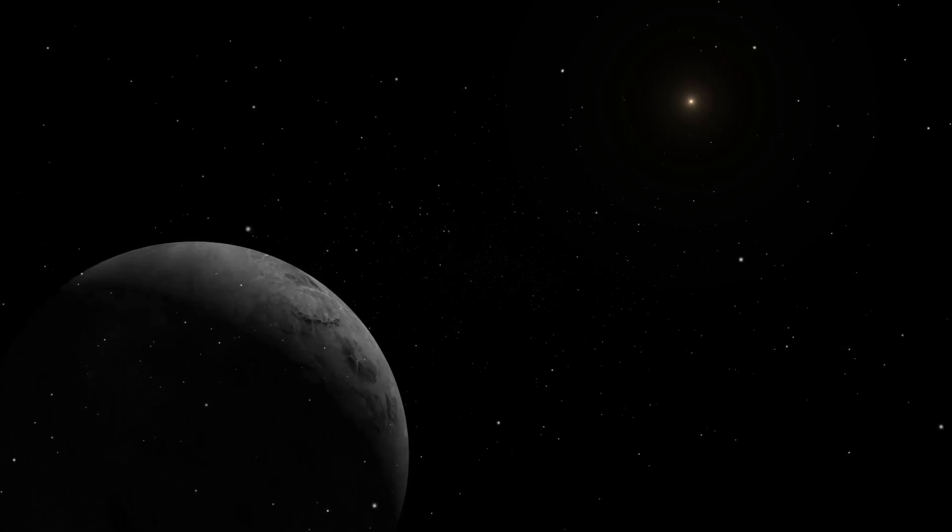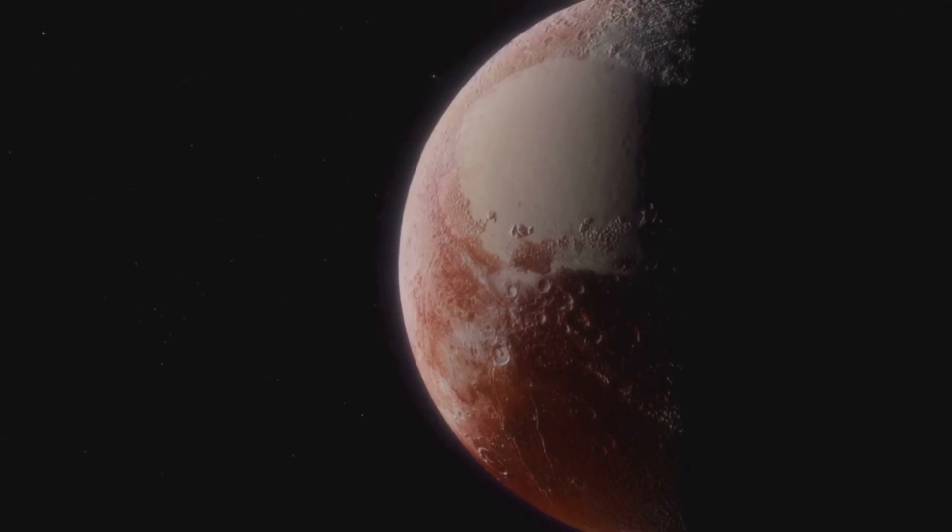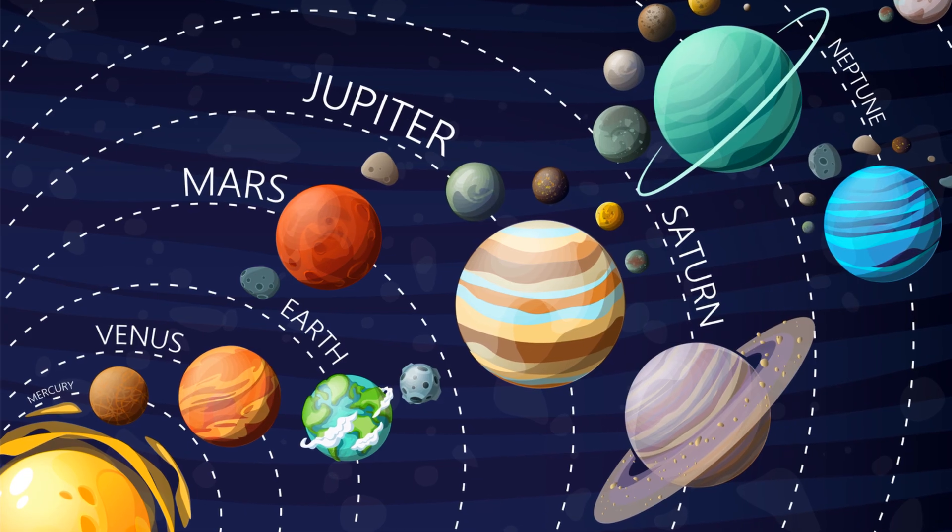Their orbits shouldn't line up, yet they all lean the same way, as if tugged by an unseen mass. Gravity was whispering a name we hadn't given yet, somewhere in that emptiness.